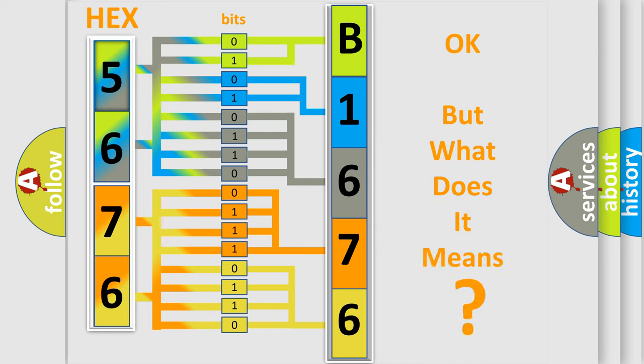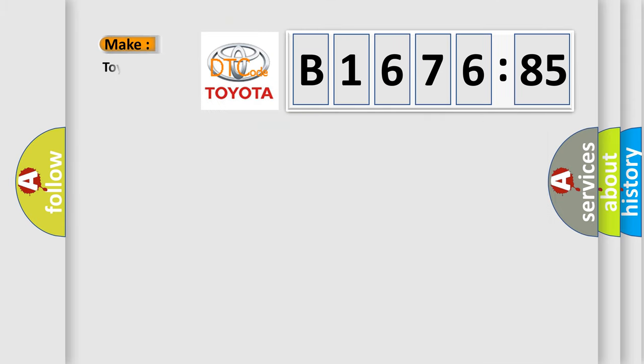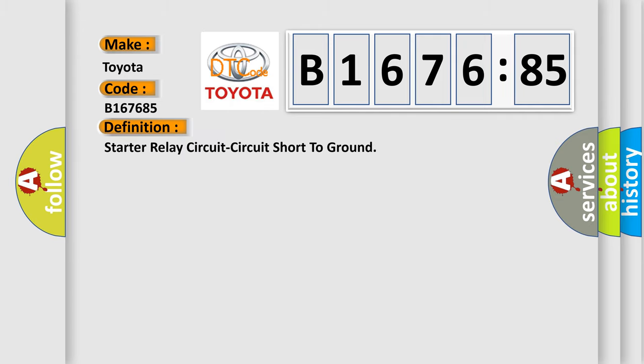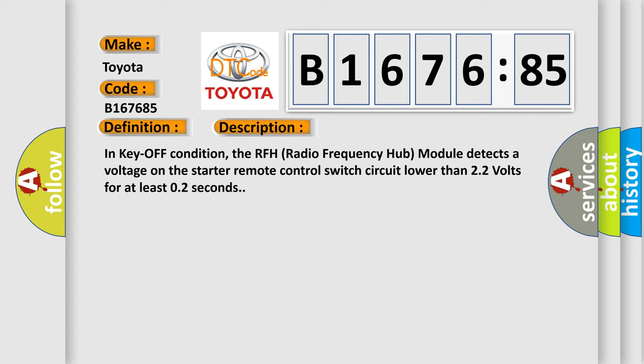The number itself does not make sense to us if we cannot assign information about what it actually expresses. So, what does the diagnostic trouble code B167685 interpret? Specifically, for Toyota car manufacturers, the basic definition is starter relay circuit short to ground.